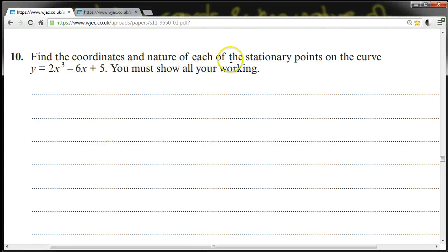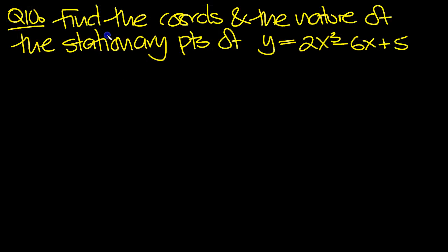Find the coordinates and nature of each of the stationary points on the curve y equals 2x cubed minus 6x plus 5. You must show all your working. So I paraphrased the question here. So here's the cubic then. So let's find the stationary points.